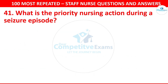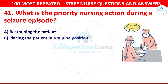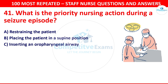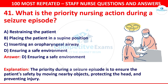Question number 41: What is the priority nursing action during a seizure episode? Options are restraining the patient, placing the patient in a supine position, inserting an oropharyngeal airway, or ensuring a safe environment. The correct answer is ensuring a safe environment. The priority during a seizure episode is to ensure the patient's safety by moving nearby objects, protecting the head, and preventing injury.